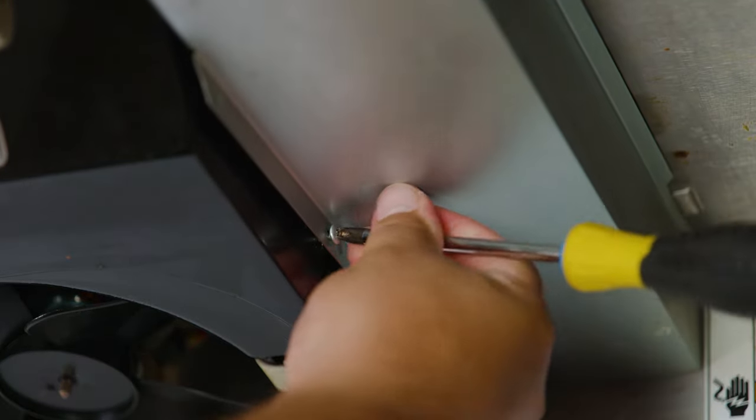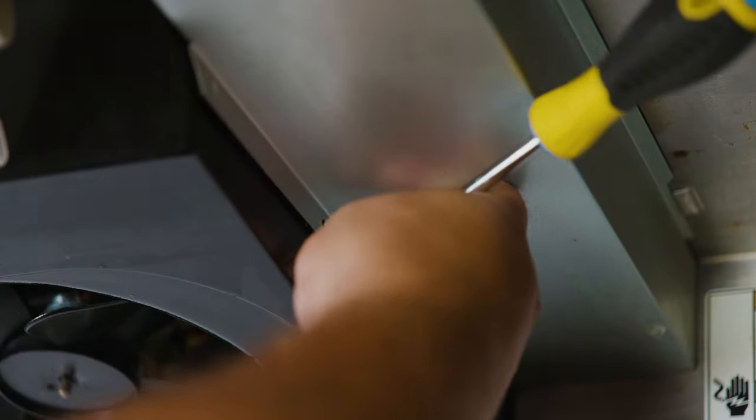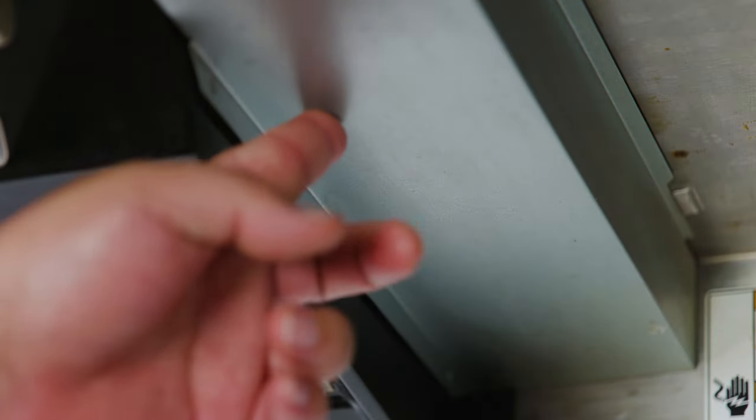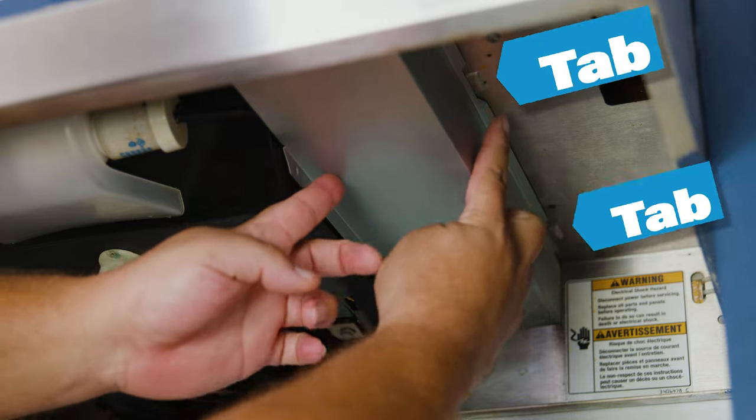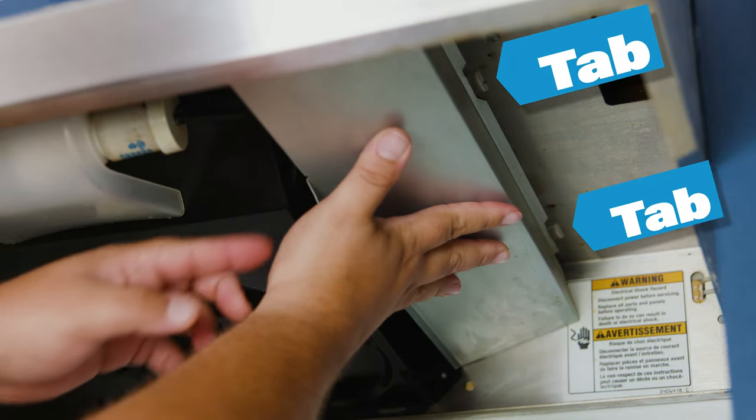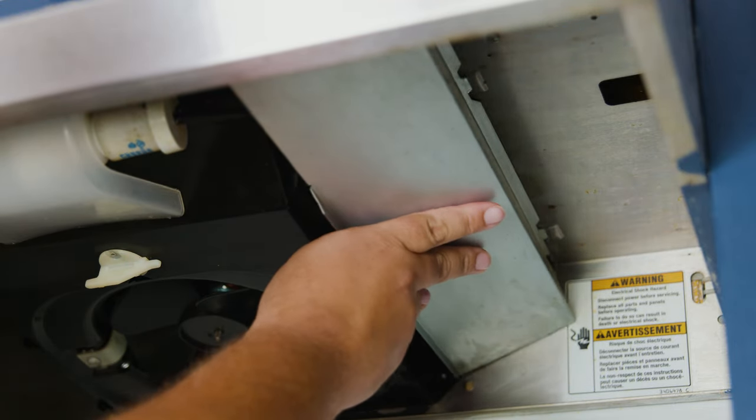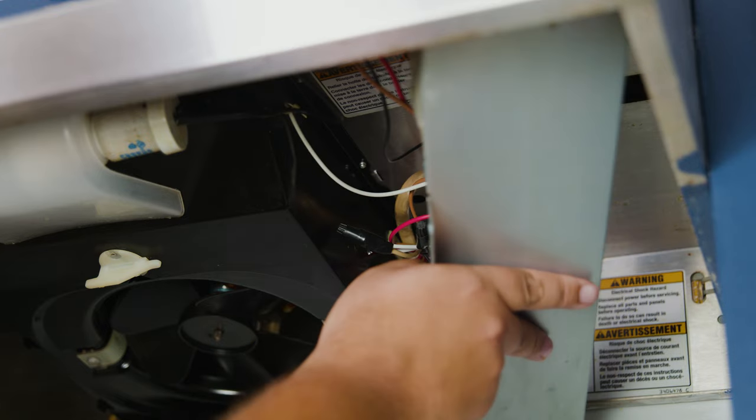We're going to use the same ancient technique passed down generation to generation of lefty loosey, righty tighty. And once we remove the screw, you're going to notice two tabs that hold the cover. We're just basically going to pull to the left and pull down.